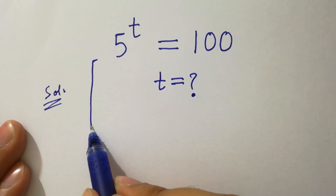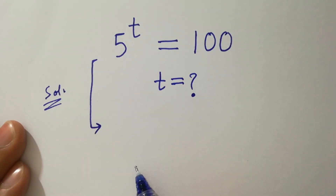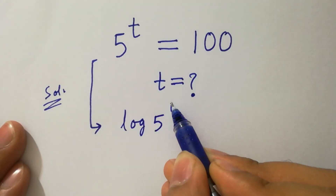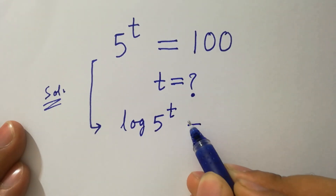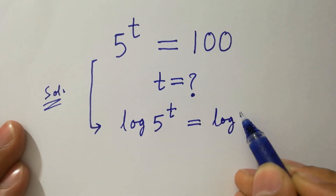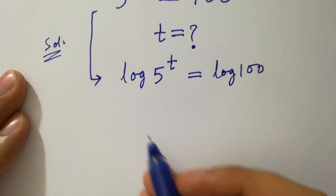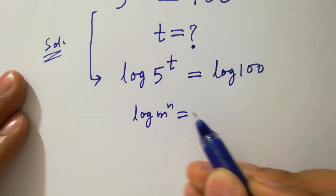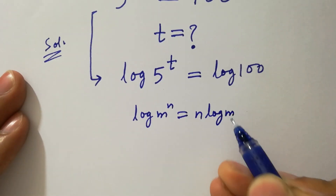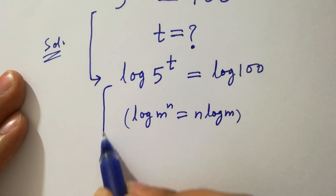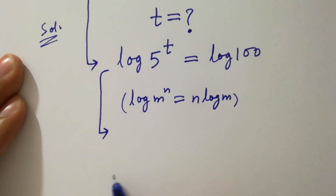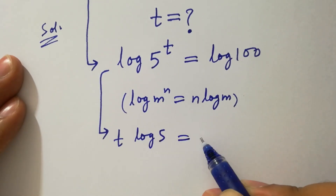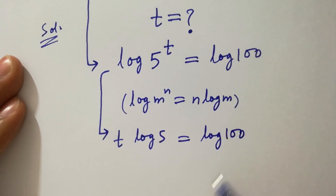To solve this problem, take log on both sides: log 5 to the power t equals log 100. Since log m to the power n equals n log m, then it will be t log 5 equals log 100.